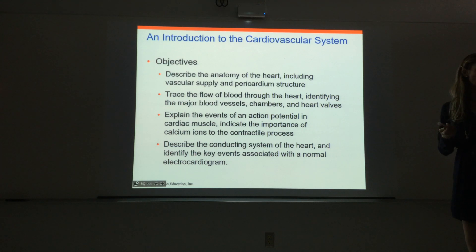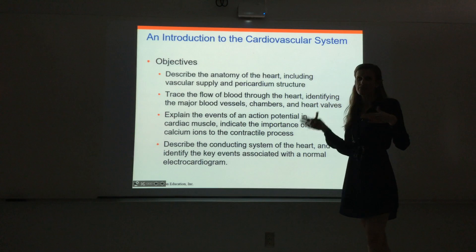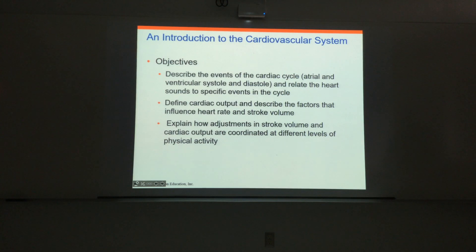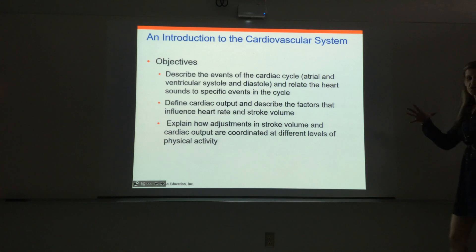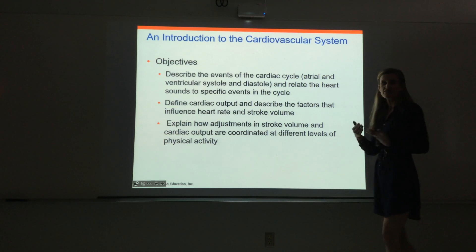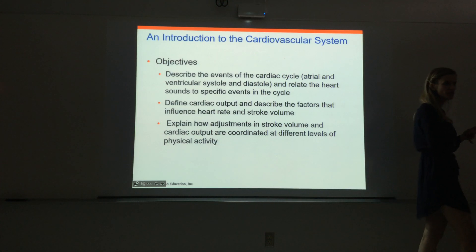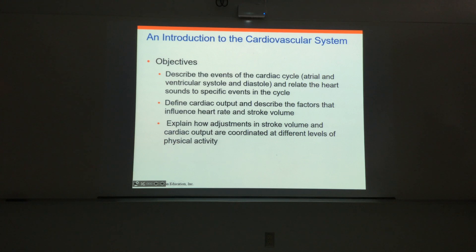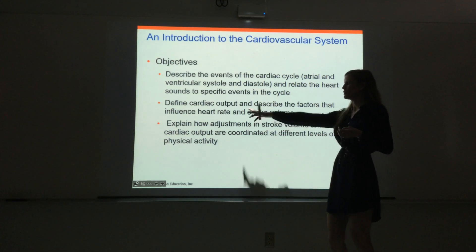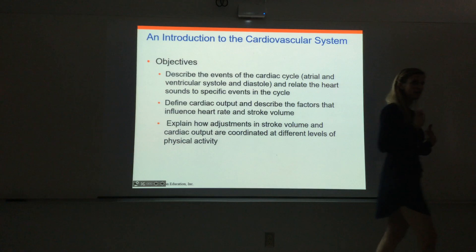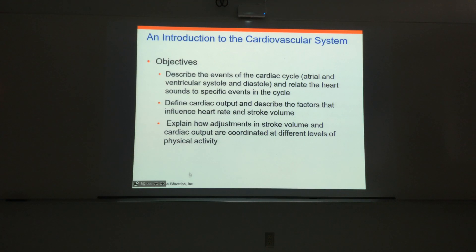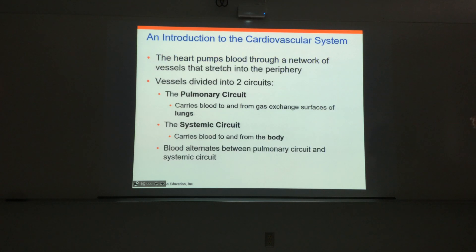We'll also talk about the conduction system of the heart — that's really the electrical system — and compare those events to what's happening in an electrocardiogram or EKG. We'll talk about the cardiac cycle: systole and diastole, or contraction and relaxation, and how those events compare to heart sounds you hear as the heart beats. Then we'll talk about ways to measure the efficiency of the heart — cardiac output, how heart rate and stroke volume affect cardiac output, and how we can adjust those things based on different levels of physical activity and demands for blood flow.